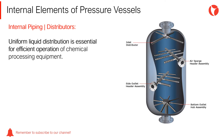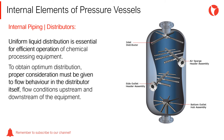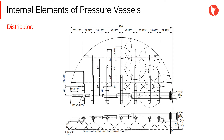Uniform liquid distribution is essential for efficient operation of chemical processing equipment. To obtain optimum distribution, proper consideration must be given to the flow behavior in the distributor itself, including flow conditions upstream and downstream of the equipment. The distributor consists of one or more pipes, with or without branches, containing a series of holes, slots, or spray nozzles.